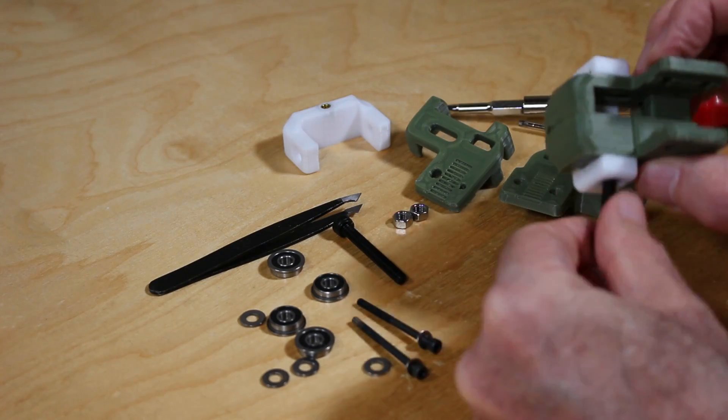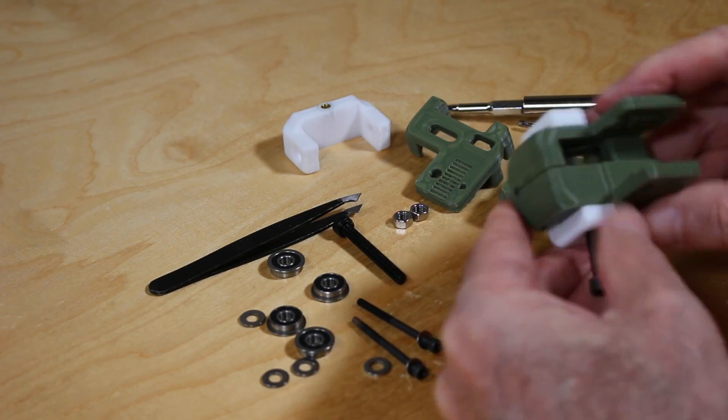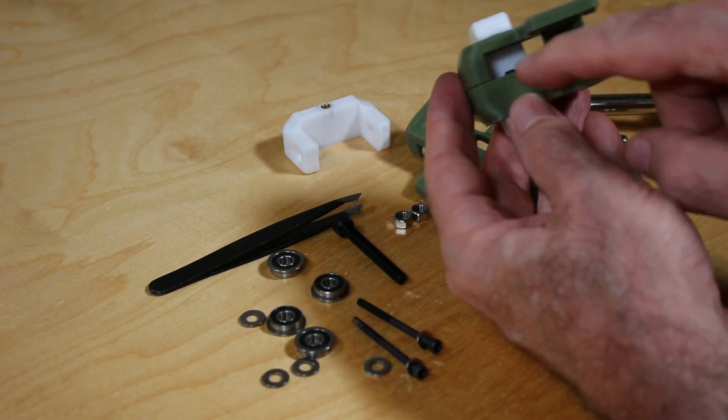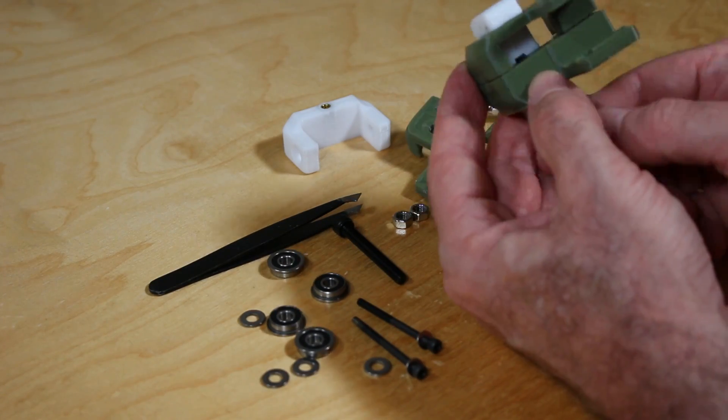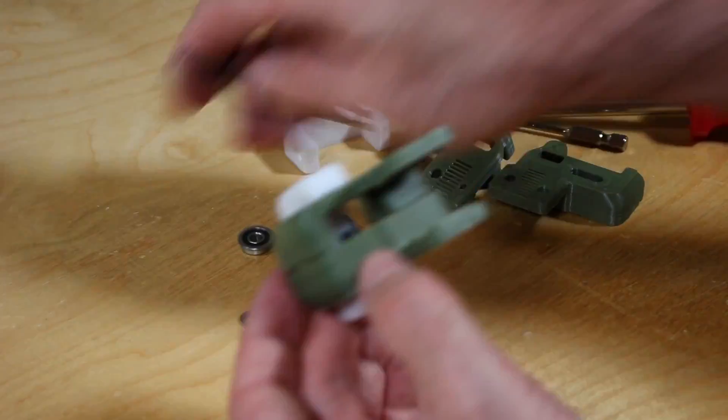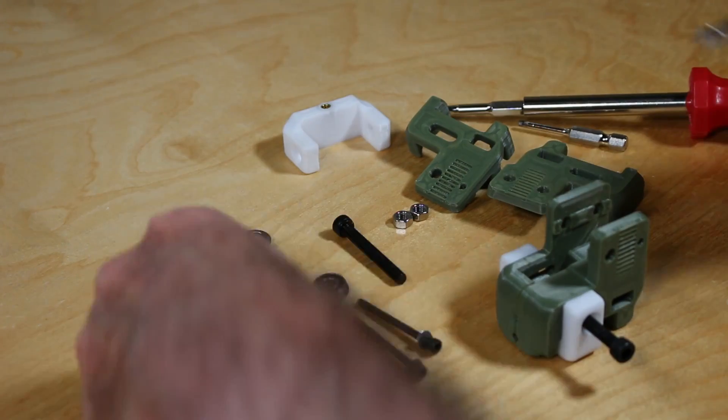A pair of tweezers along with your hex wrenches will definitely help here. So here I'm inserting the screw just a little bit, not all the way through, and this will make placement of the washers and the bearings much easier.